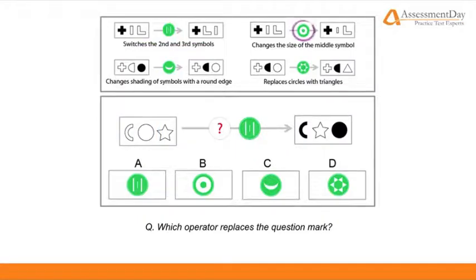The target operator here states it changes the size of the middle symbol. That doesn't seem to help. The sun operator states it will replace circles with triangles. Again, not correct here.